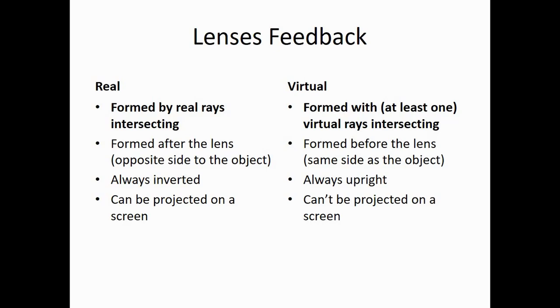If I take a piece of paper and place it at the focal length, then if I have a real image, you'll see an image being formed on the paper. The light is focused at that point. If you tried that with a virtual image though, you would get nothing at all. The rays don't actually cross at that point. We can also talk about whether or not they are inverted or upright and whether they're formed before or after the lens.